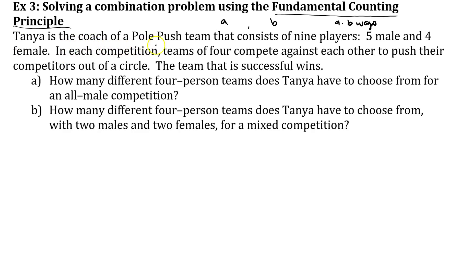Tonya is the coach of a pole push team that consists of nine players: five male and four female. In a competition, teams of four compete against each other to push their competitors out of the circle. A team that is successful wins. So: A, how many different four-person teams does Tonya have to choose from for an all-male competition? And B, how many different four-person teams can Tonya choose from with two males and two females for a mixed competition?